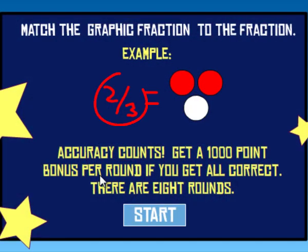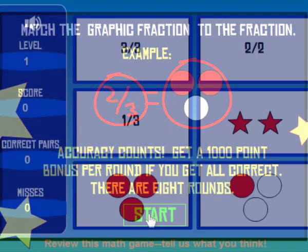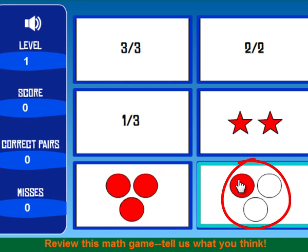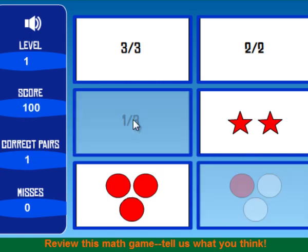Just match the fraction to the set. For instance, one of these three circles is red. One of three, that matches one-third.